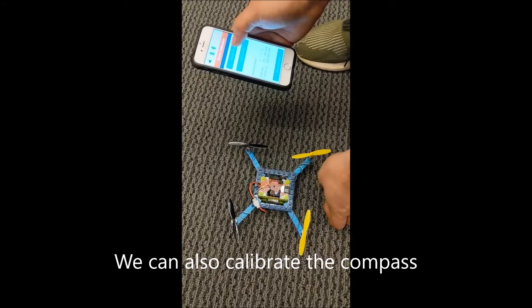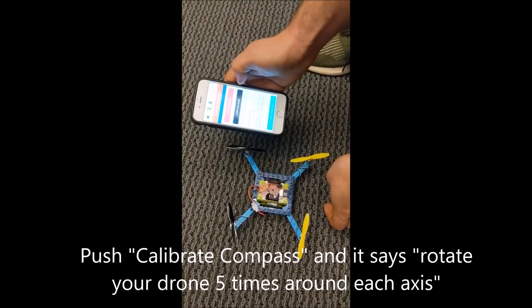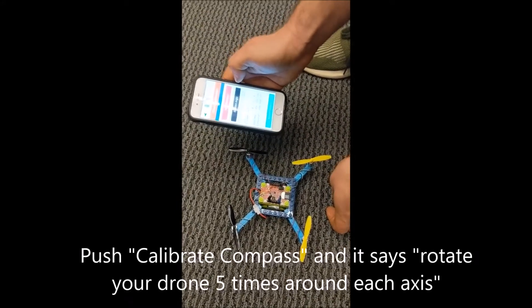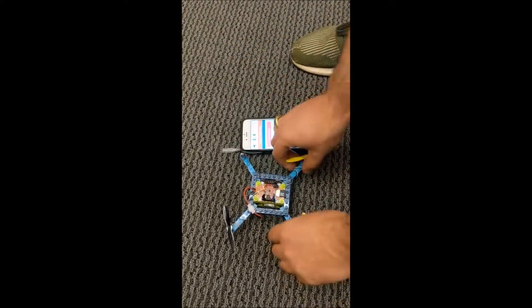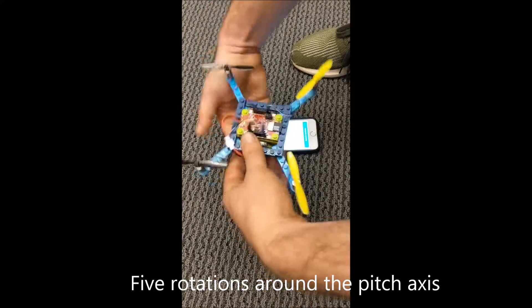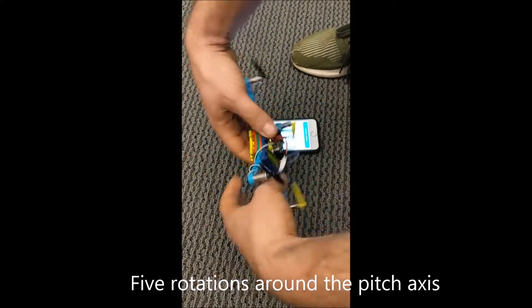We can also calibrate the compass. Tap calibrate compass. Now it says please rotate your drone five times around each axis then click end calibration. So we'll do it one, two, three.